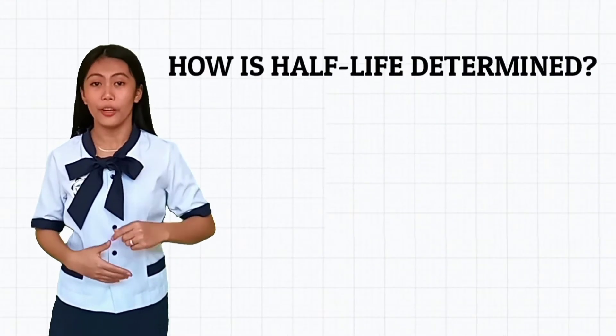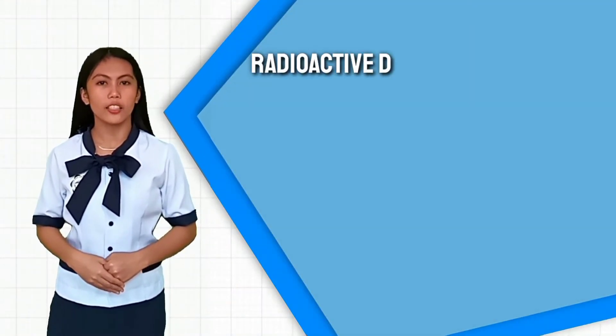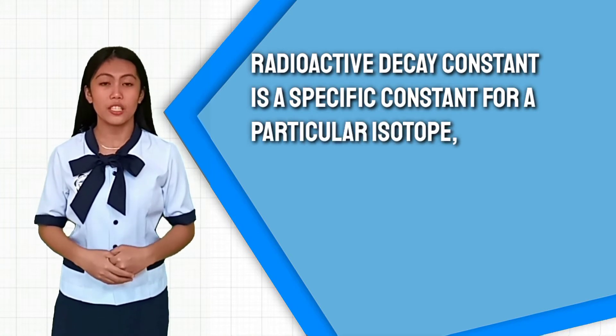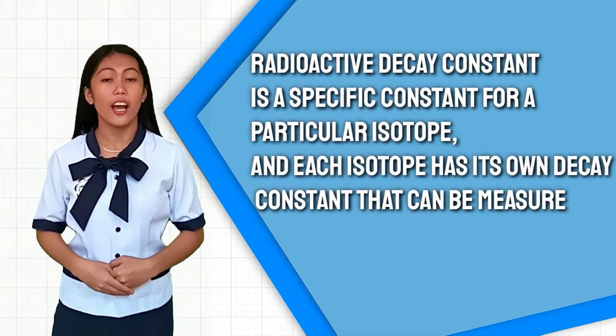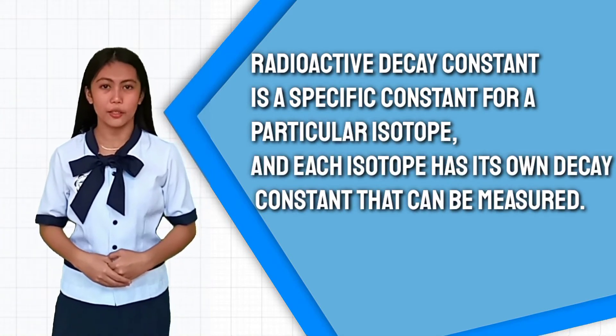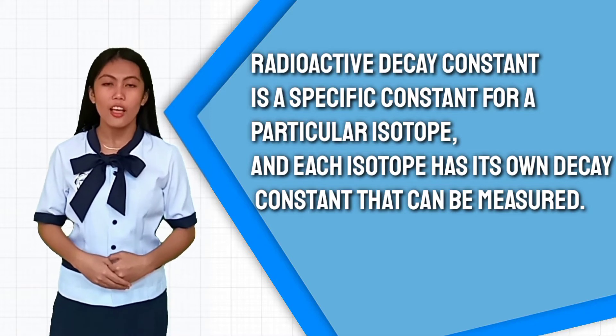But how is half-life determined? Radioactive decay constant is a specific constant for a particular isotope, and each isotope has its own decay constant that can be measured.